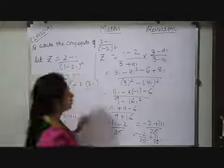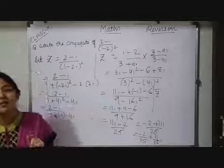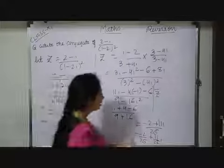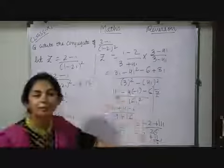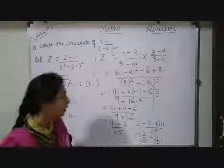Now, we have to find out conjugate. So, conjugate we can denote it as z bar and conjugate always we can write down by changing a sign of imaginary part. So, here we are having imaginary part positive. If we write down negative, it will be a conjugate of a given complex number.